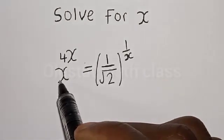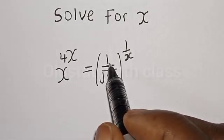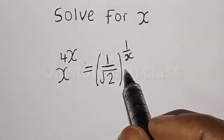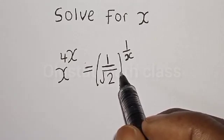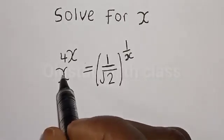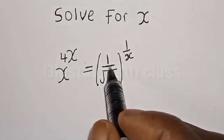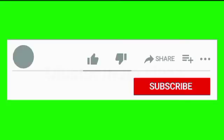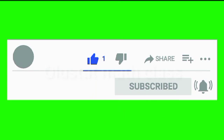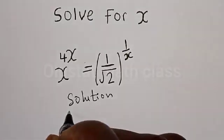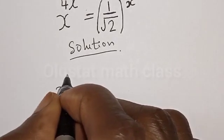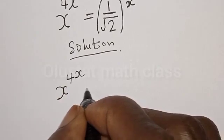Solve for x: x raised to power 4x is equal to 1 divided by square root of 2, raised to power 1 divided by x. Hi everyone, welcome to my class. In this class we want to find the value of x from this given equation: x raised to power 4x is equal to 1 divided by root of 2, raised to power 1 divided by x.